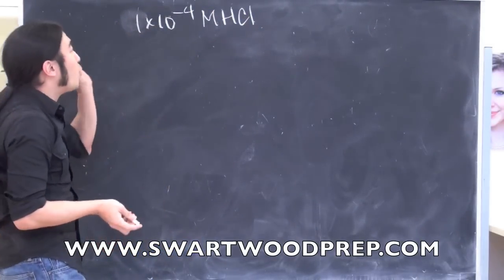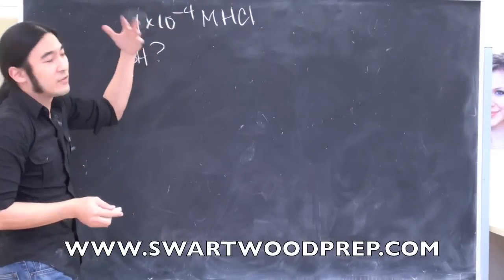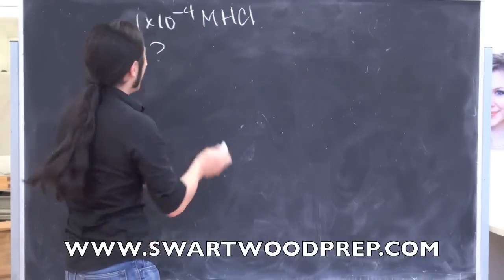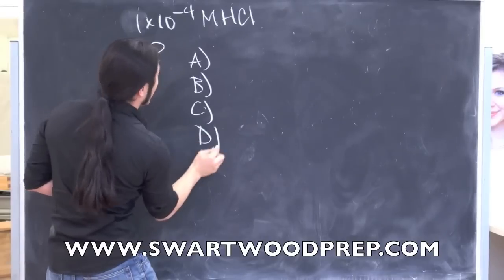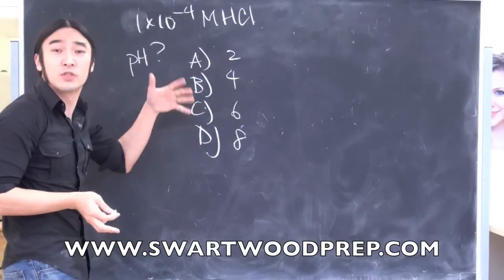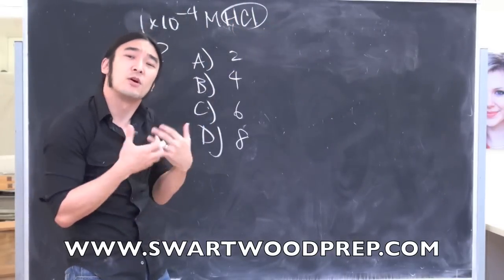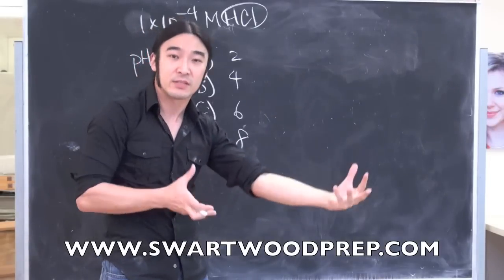So here's a quick demo problem. What is the pH of a solution that's 1 times 10 to the negative 4 molar HCl? And the answer choices might be something like this. Super mellow, super easy. You remember, just basic ideas. First, it's a strong acid, so that means it will almost completely dissociate, and more than that, at equilibrium, it will stay dissociated.